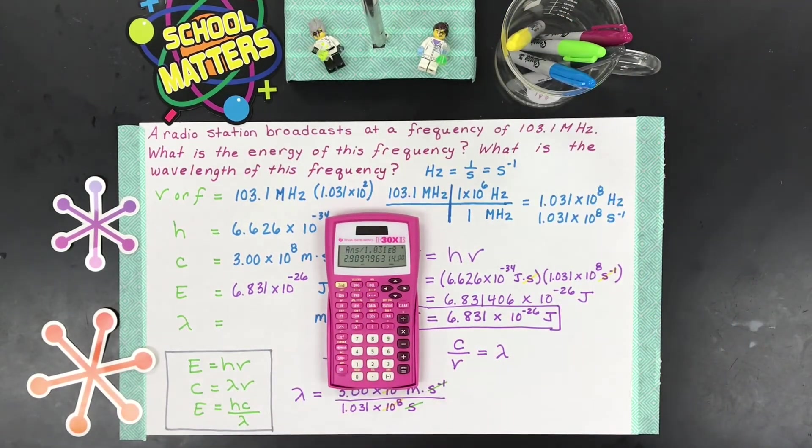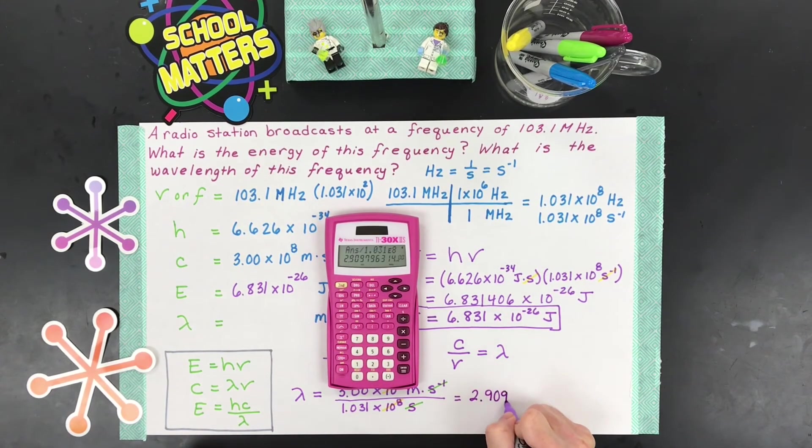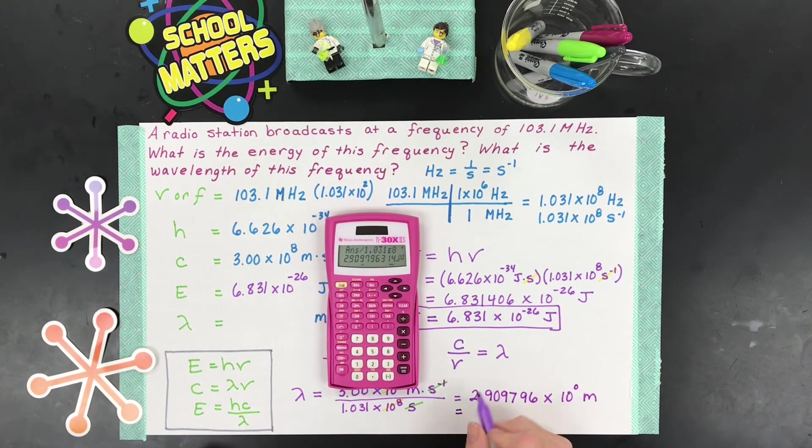That's a lot of digits. I'm going to write as many as I can fit here. So we get that this is equal to 2.9097 and then 9.6, and then times 10 to the 0. So that might confuse you, but don't let it. 10 to the 0 is just 1. So this is 2.909796 meters.